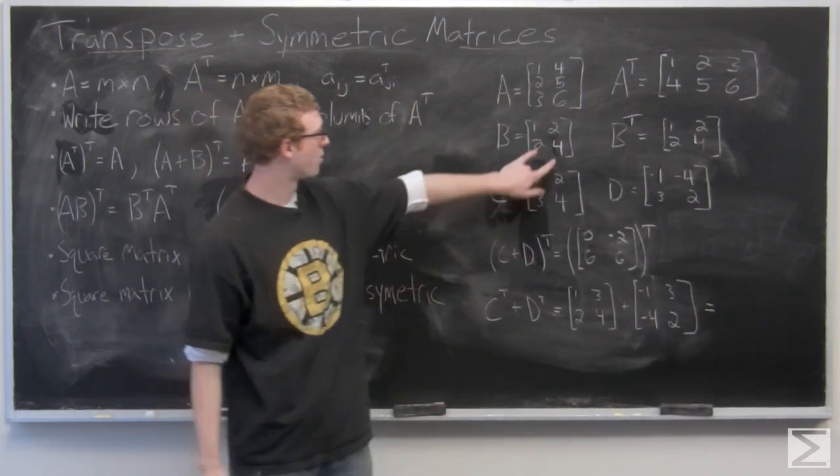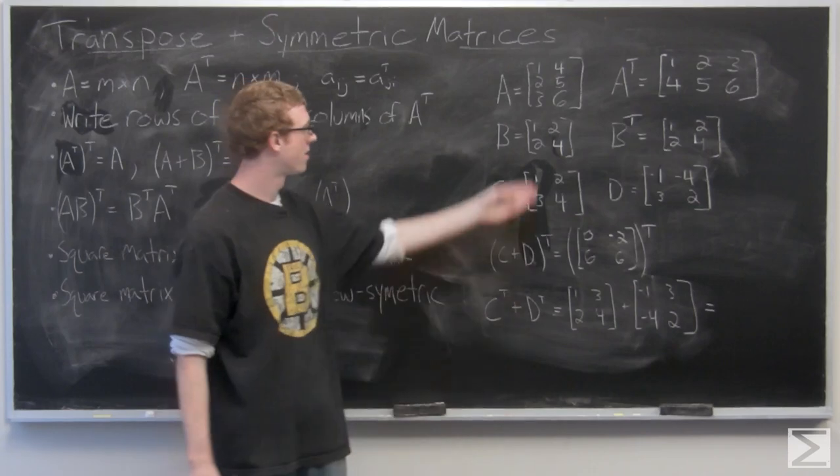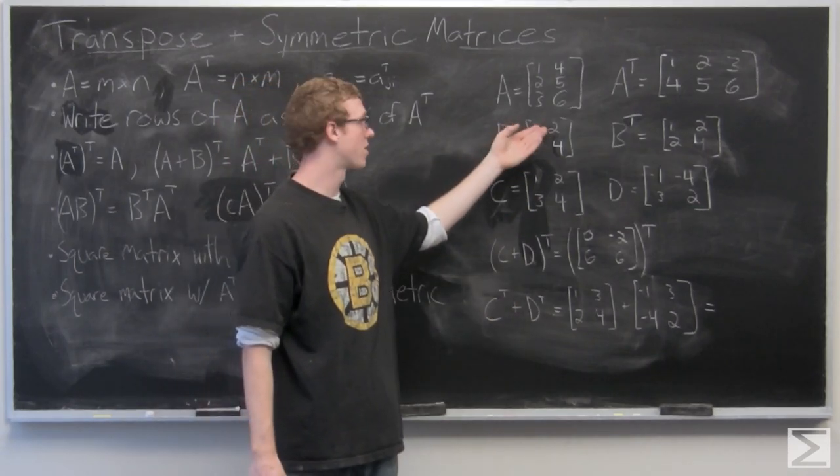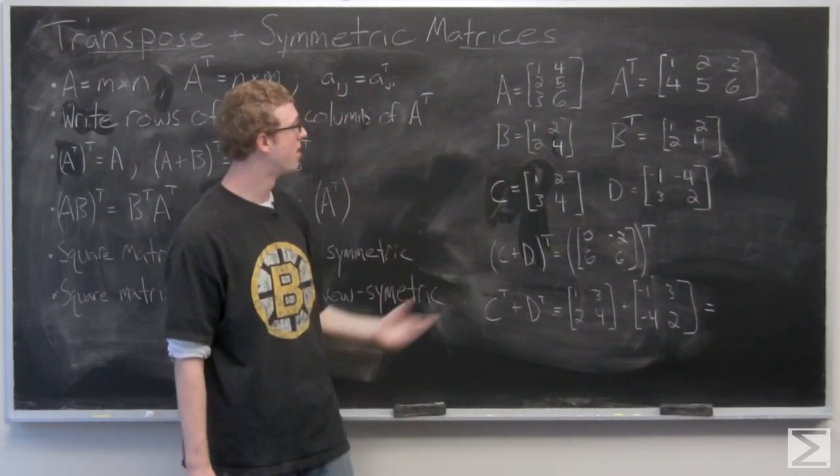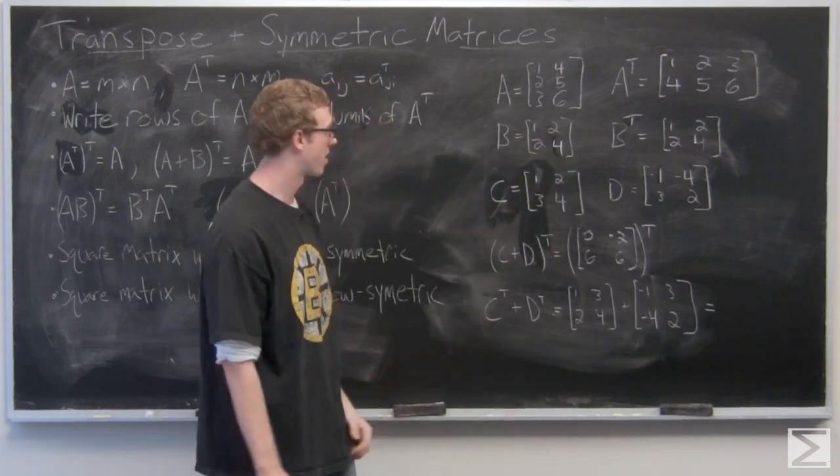Those entries don't switch at all because 1st row, 1st column becomes 1st row, 1st column. 2nd row, 2nd column becomes 2nd row, 2nd column.